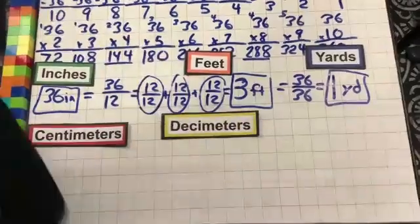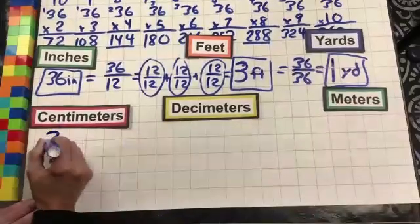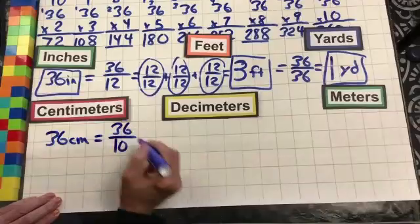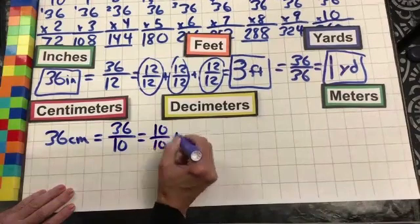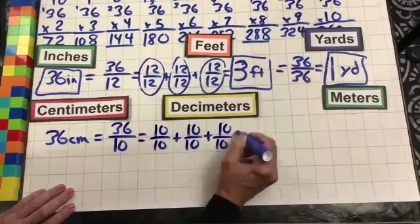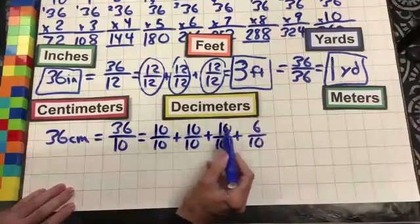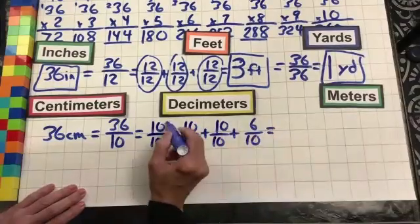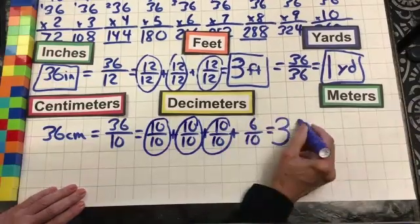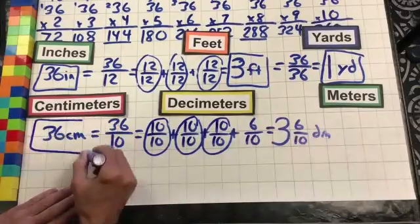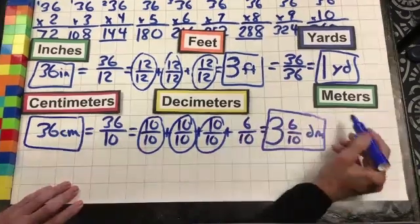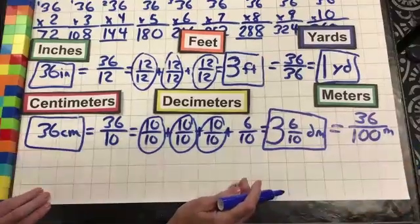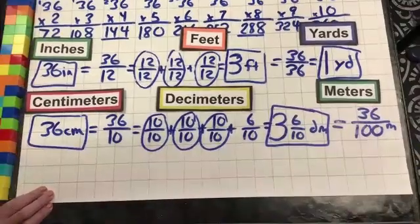Now let's go on to metric measurement. We have 36 centimeters. We know it takes 10 to make a decimeter. 36 out of 10 breaks down into 10 over 10 plus 10 over 10 plus 10 over 10 plus 6 over 10 — that's 10, 20, 30, 6. So we have 3 whole and 6 tenths decimeters. 36 centimeters is the same as 3 and 6 tenths decimeters. It takes 100 centimeters to make a meter, so we have 36 hundredths of a meter. And we're done with the number 36. Have a great day.